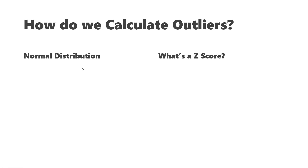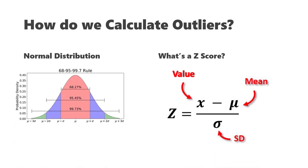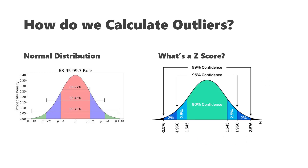So how do we calculate outliers? We use the normal distribution and Z-score. The normal distribution gives us the bell curve and tells us that 99.7% of all our data will fall within three standard deviations of the mean. Within two standard deviations of the mean, we have 95% of our data. We can use the Z-score to give us the position on that bell curve, and we can use the Z-score formula to calculate where our outliers lie.